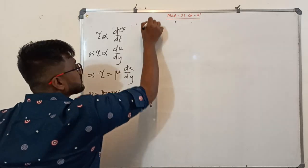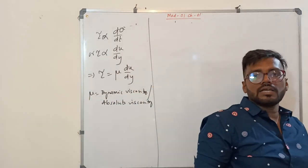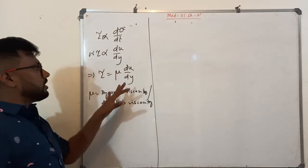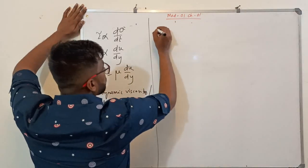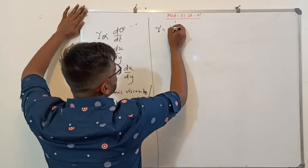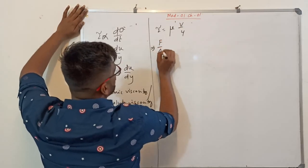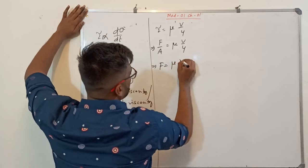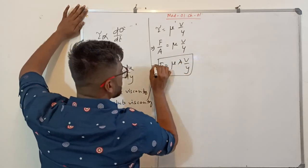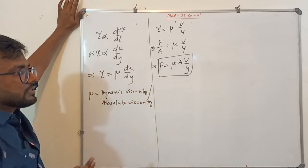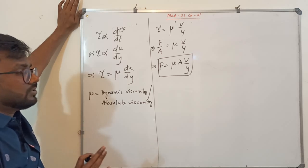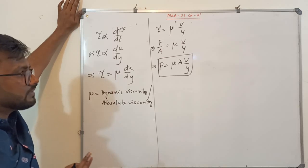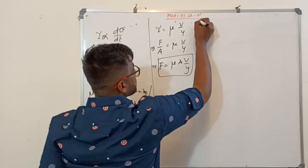If you feel I'm teaching too fast, you can slow down the video; if too slow, speed it up — YouTube gives a lot of options. For a linear flow, tau equals mu times v by y. Shear stress tau equals shear force divided by area, so shear force becomes mu times A times v by y. This equation is very important; GATE and other exams ask numericals from this.